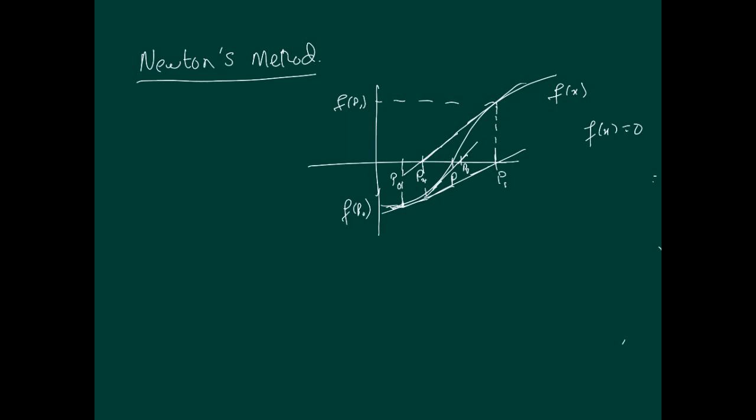If we go back to the first situation, P0 and P1, let's try to look at this situation. If we try to get the equation of this tangent line, this point here is a point on the line, and its coordinates are P0 and f(P0).